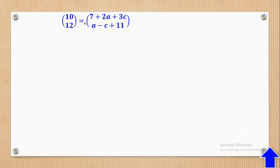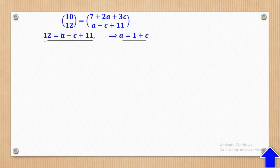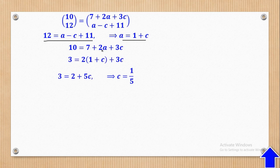Simplifying and applying equality of vectors, we get 12 = A − C + 11, which gives A = 1 + C. For the first row we get 10 = 7 + 2A + 3C. Substituting for A, simplifying gives C = 1/5. Substituting back, A = 6/5. Those are the values required for part A.